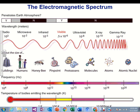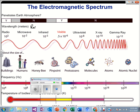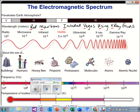Each letter in 'red Martians invaded Vegas using x-ray guns' is the first letter of our electromagnetic spectrum. So: red goes with radio, Martians with microwaves, invaded with infrared, Vegas is full of lights we can see so it's for visible, using is ultraviolet, x-ray is obviously x-ray, and guns are our gamma rays.